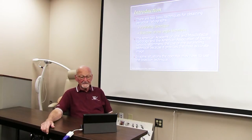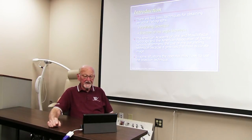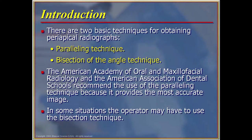There are two basic techniques for obtaining periapical radiographs in dentistry. One is called the paralleling technique, the other is called the bisecting angle technique. The American Academy of Oral and Maxillofacial Radiology and the American Association of Dental Schools recommend very strongly the use of the paralleling technique because it gives the most accurate image.